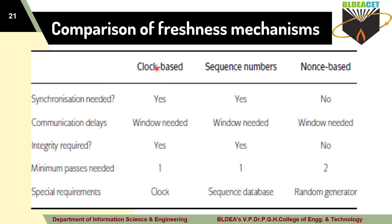Regarding synchronization: in clock-based, yes — both sender and receiver must show the same time on their clocks. In sequence-number-based, yes — synchronization is needed because the receiver must know the sequence. In nonce-based, synchronization is not necessary. The sender randomly generates a nonce, and the receiver simply checks whether the received nonce is fresh and unique.